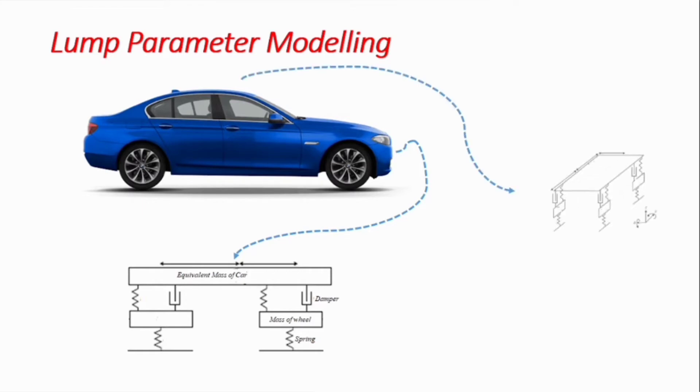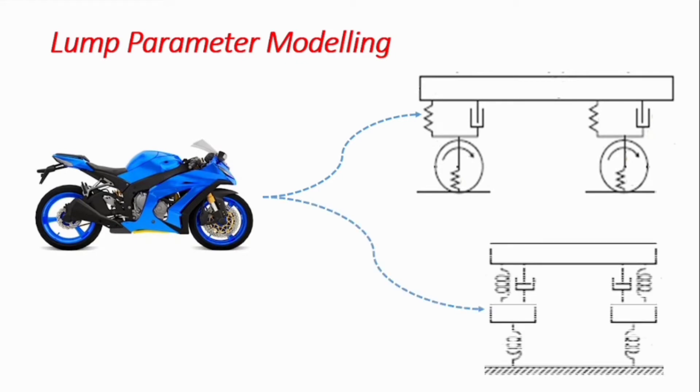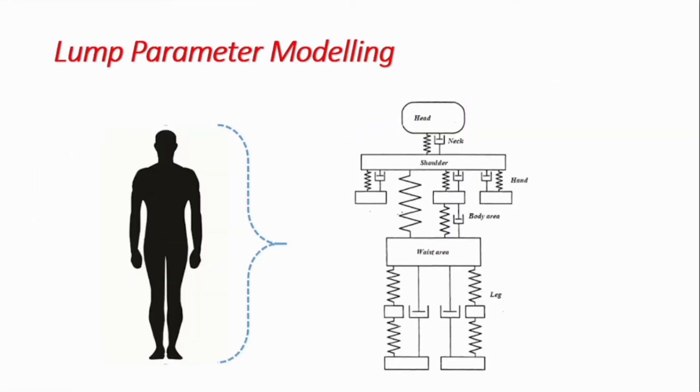This configuration varies from one analyst to another and could take any form. For example, a bike could be modeled, and you can have different model forms for the same bike. The challenge becomes how to get equivalent values of these springs, dampers, and masses for the system being modeled. It could also be anything, even a biological system like the entire human body.